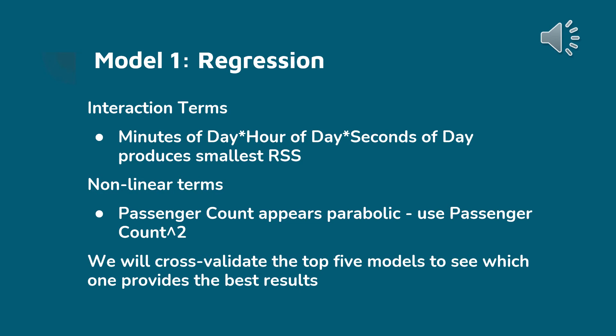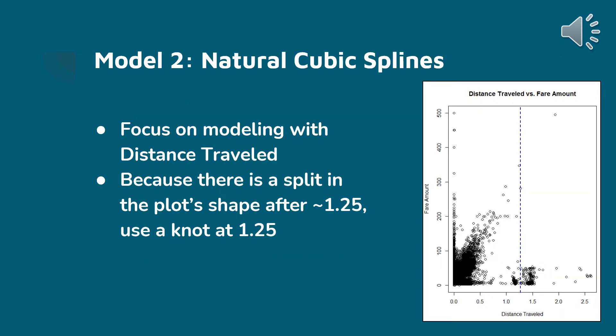All five of these models will be run through our cross-validation set approach. To go along with our regression, we wanted to do a second model type: a natural cubic spline. We chose this because in the plot of distance traveled versus fare amount, there's a clear shift in the trend between under 1.25 and after 1.25. So we decided to put a knot right at 1.25 to model this data using two separate functions.